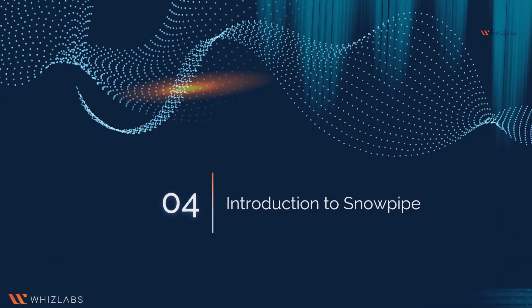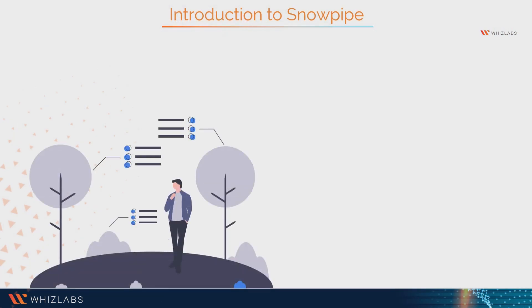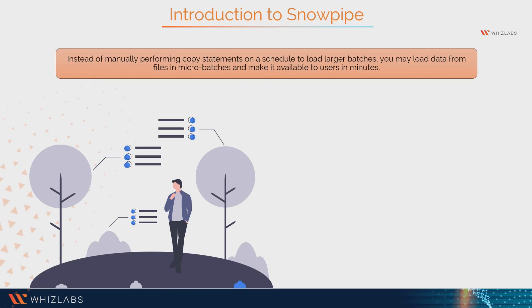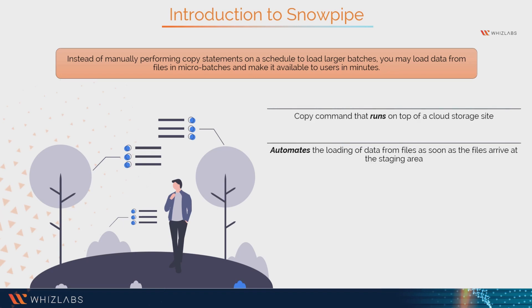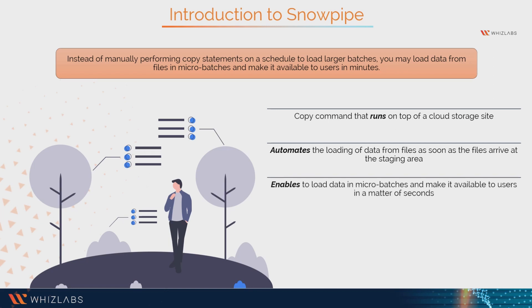Let us start with an introduction to Snowpipe. Snowpipe allows you to load data from files into a stage as soon as the storage becomes accessible. Instead of manually performing copy statements on a schedule to load larger batches, you may load data from files in micro batches and make it available to users in minutes. Snowpipe automates the loading of data from files as soon as the files arrive at the staging area, enabling you to load data in micro batches and make it available to users in a matter of seconds.